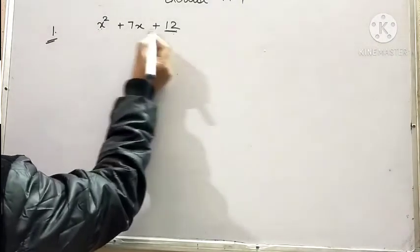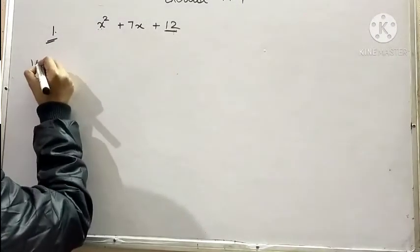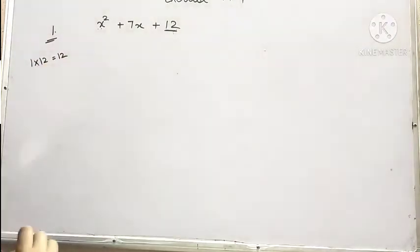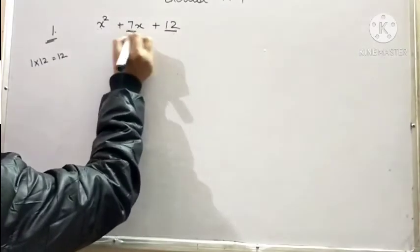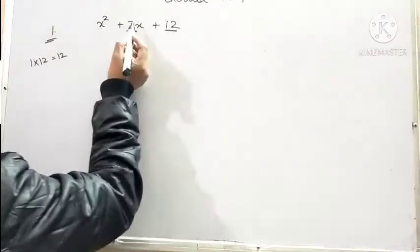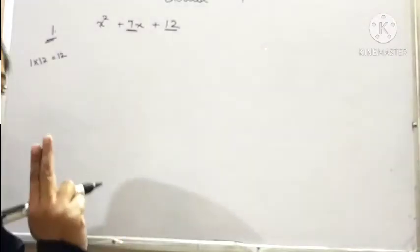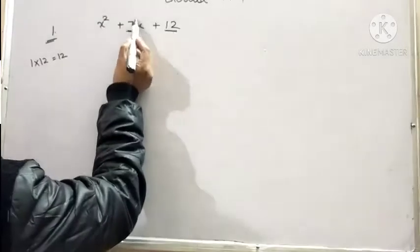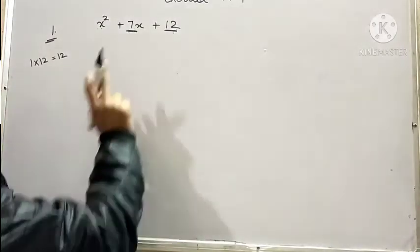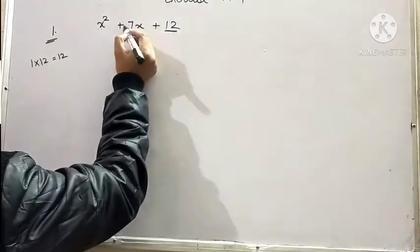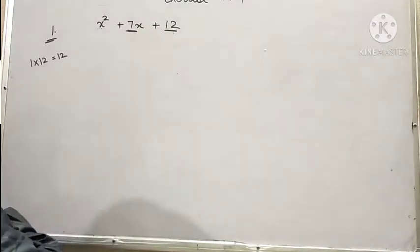So if we multiply 1 and 12, we get 1 into 12 is equal to 12. Now we have to split this 7 in a manner that the product is 12 and the sum is 7. So we need to split it in that manner.